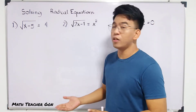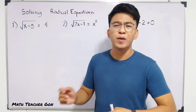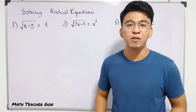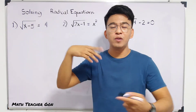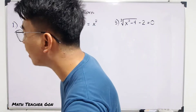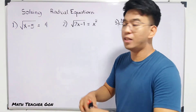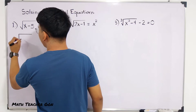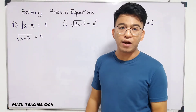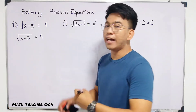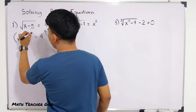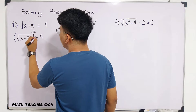Before starting to solve this equation, we need to determine first what is the main problem — why it looks difficult to solve. The issue is the radical sign. How are we going to solve that equation when it has a radical? Don't worry, we have an easy way to handle this. So first, I need to copy the given equation: the square root of x minus 5 is equal to 4. What we need to do is to square both sides of the equation — raise both sides by the exponent of 2. We square the whole radical by exponent of 2, same with 4.